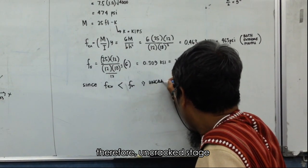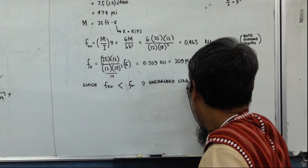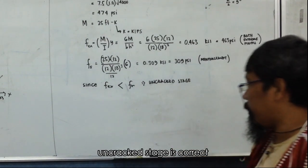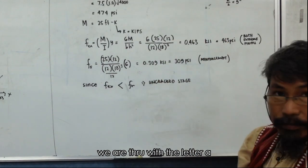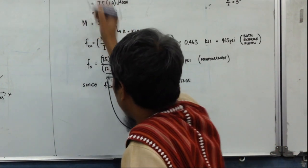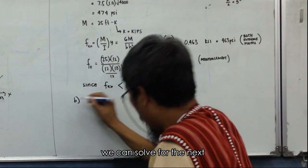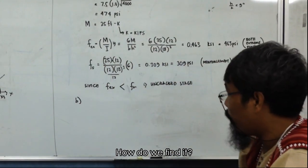The situation is stage 1, the first stage. We are on the first stage. This is why, so therefore, uncracked stage. Uncracked stage is correct. So we are through with it, we are through with it. Letter A, this is the letter A. So we can solve now the next. Find the cracking moment of the section. How do we find it?